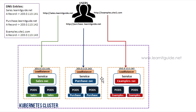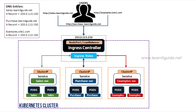What if you had a single entry point for all applications that forwards traffic to the respective services, like a regular proxy server? In that case you don't need to expose all applications using NodePort or LoadBalancer. Instead, change all application service types to ClusterIP and keep your applications safe within the cluster as private applications.